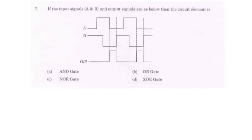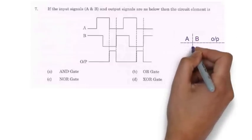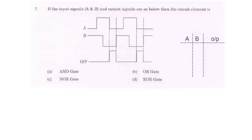Now let's move to question number 7. Here they have given waveforms of inputs a and b and output waveforms is also given and we have to identify the circuit element.